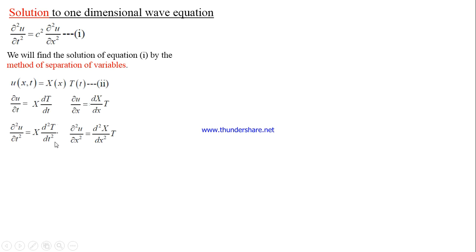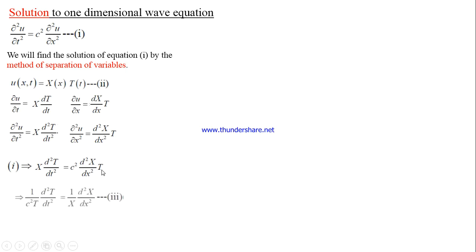Now substitute these two expressions back into equation number one. X · d²T/dt² is my ∂²u/∂t², and we substitute ∂²u/∂x² on the right-hand side. Dividing throughout by X · T gives: (1/T) · d²T/dt² = c² · (1/X) · d²X/dx². Note that c² is just a constant and can appear on either side.